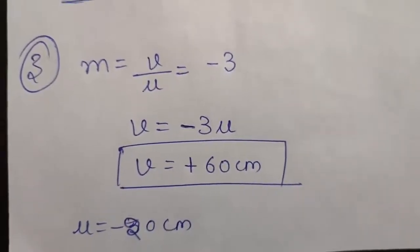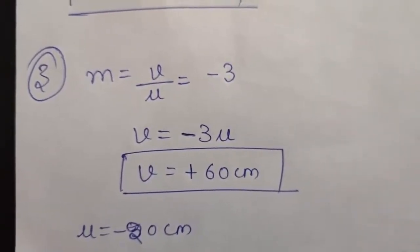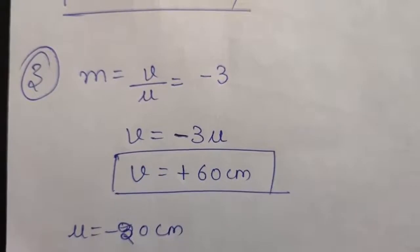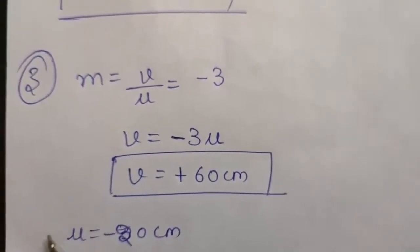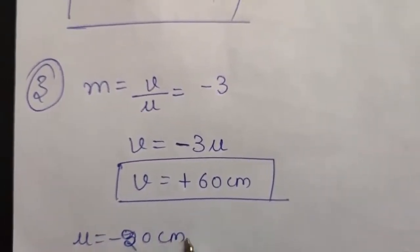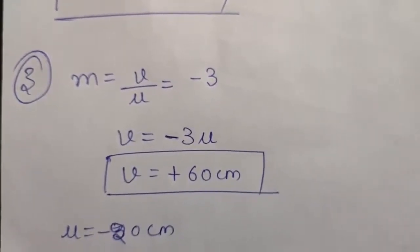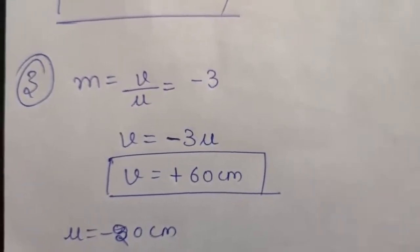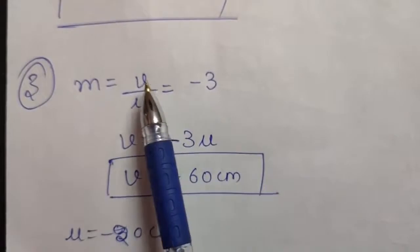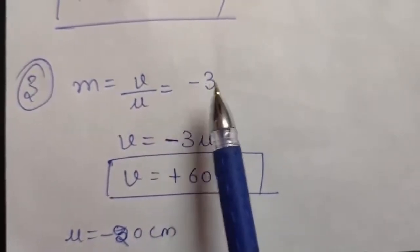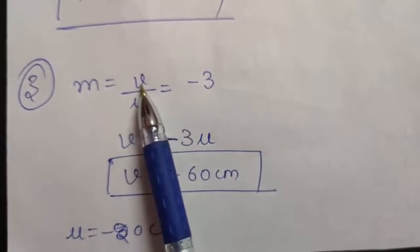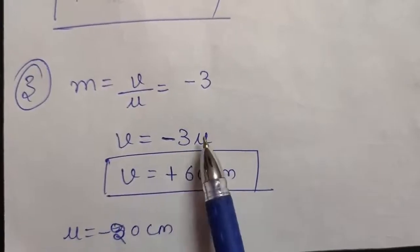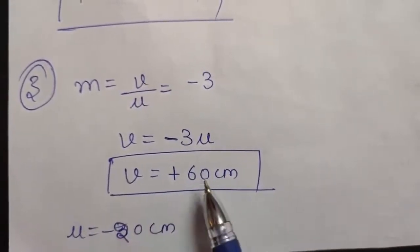In the third question, a concave mirror gives an image 3 times as large as the object which is placed at a distance of 20 centimeters. That means u is given to be minus 20 centimeters and magnification is given to be 3. But always remember, in this question it is given the image should be real, that means the magnification will be negative. The formula of magnification for mirrors is v by u, and this should be minus 3 according to the question. So from here v can be written as minus 3u. As u is minus 20, v will come to be 60 centimeters.